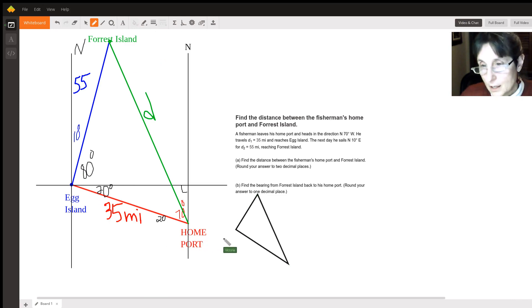This angle at Egg Island is 80 plus 20 is 100, and that's the only angle we really know. Up here at Forest Island we don't know the angle, but we know there's 55 miles on this leg and we know that there's 35 miles on this leg and this is the D that we're looking for.